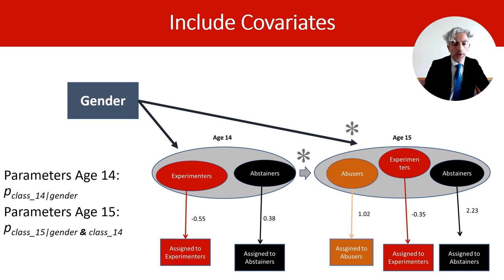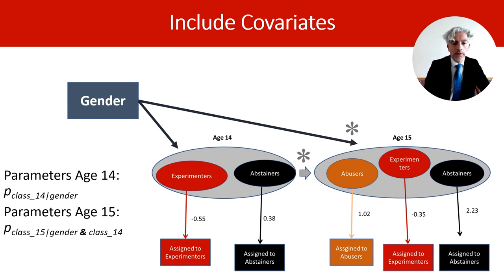From a model including covariates, we obtain these parameters: first, the probability of being in one class conditional on gender. At age 15, however, the parameters report the probability of being in one latent class conditional on gender and latent class at the previous time point — age 14 years. In other words, this parameter represents latent class probabilities adjusted based on the previous class membership.